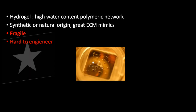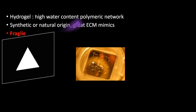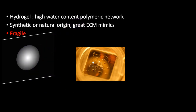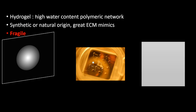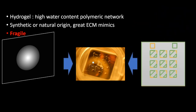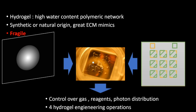To tackle this challenge, we use the capacity of PRIMO to control the shape and gray levels of the UV beam, in combination with gas-permeable PDMS micro-reactors. This gave us precise control over the gas, reagent, and photon distribution during the engineering processes. In turn, four distinct engineering operations are possible using the setup, and I will present them afterwards.